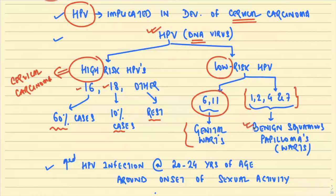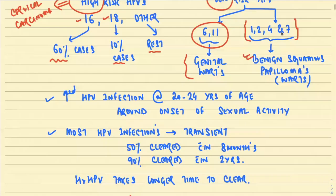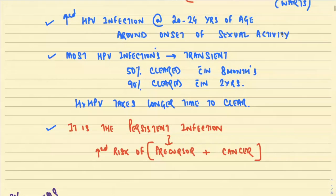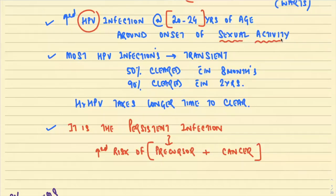It is very important to remember which are the high-risk HPVs, which are the low-risk HPVs, and the associated lesions. Lot of MCQs are asked from this part. Increased HPV infection occurs at an early age — around 20 to 24 years — because it is at this age that there is an onset of sexual activity, and the incidence of HPV infection is very high.